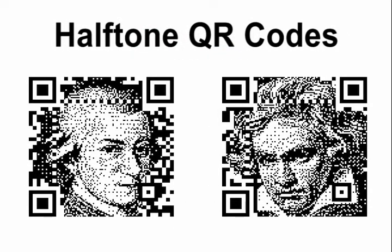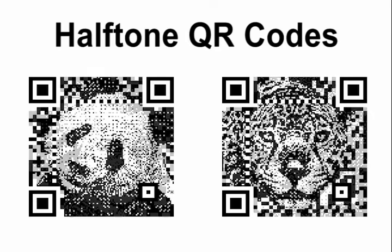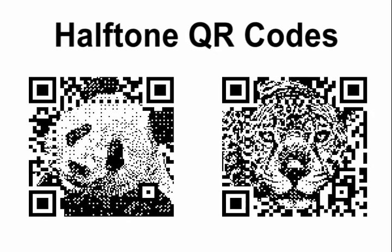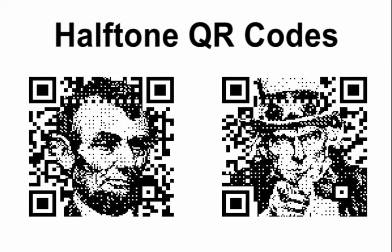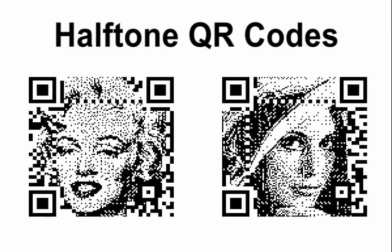In this work, we present an automatic algorithm to create a new type of visual QR code, called halftone QR code. We propose a novel technique to combine halftone images with ordinary QR codes. It produces results with high fidelity of the original halftone image, while retaining the readability of the original QR code.